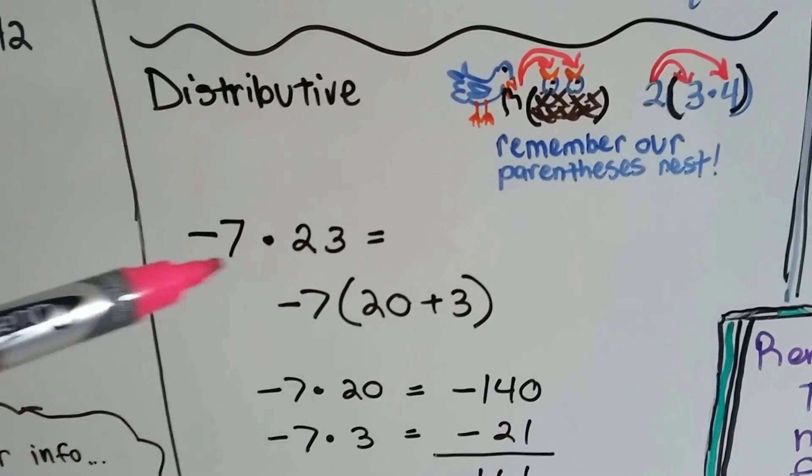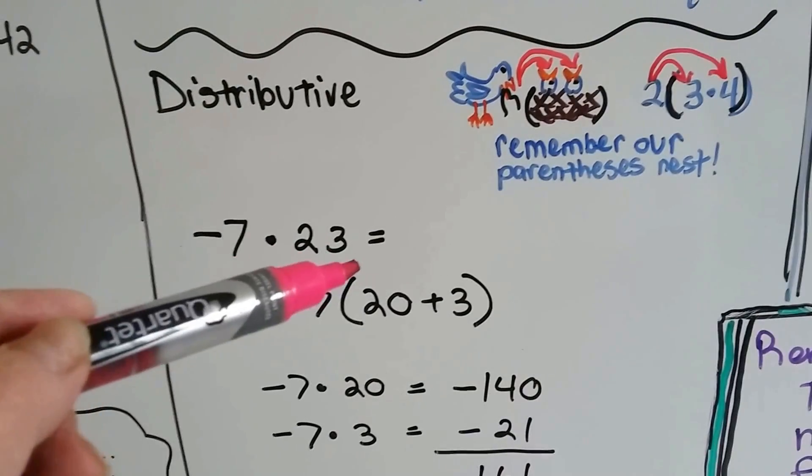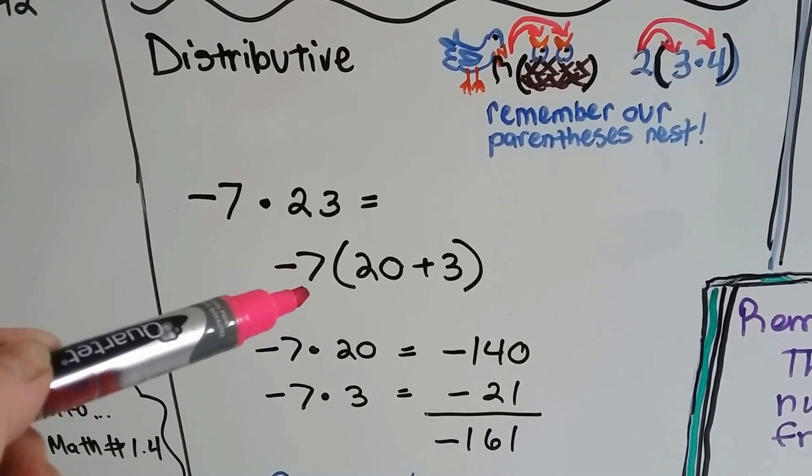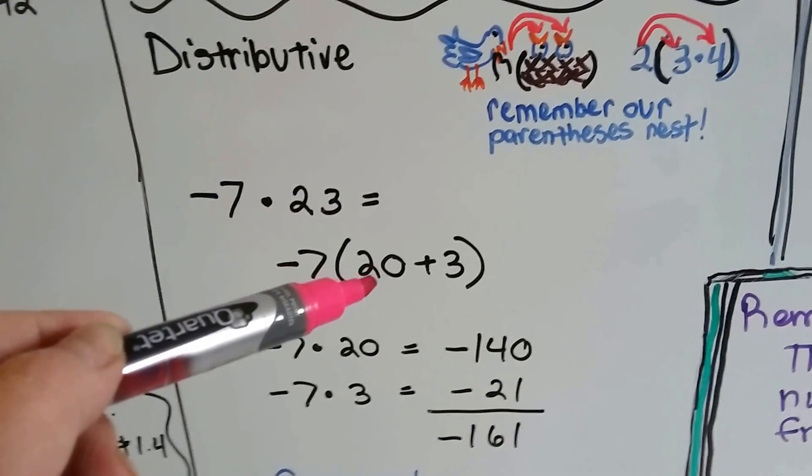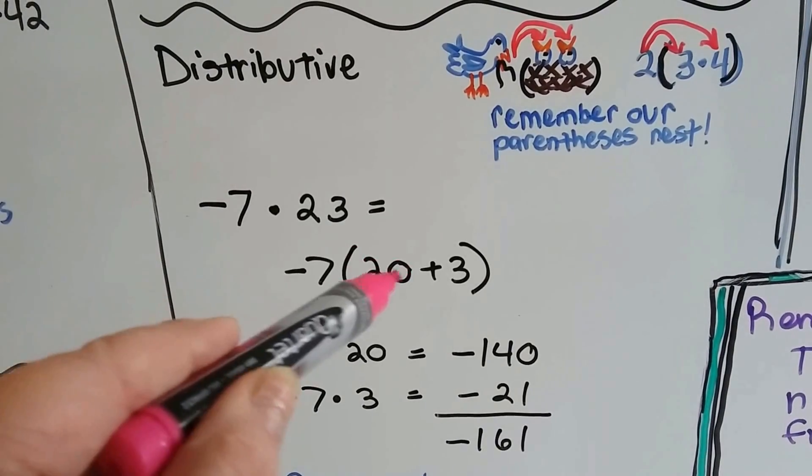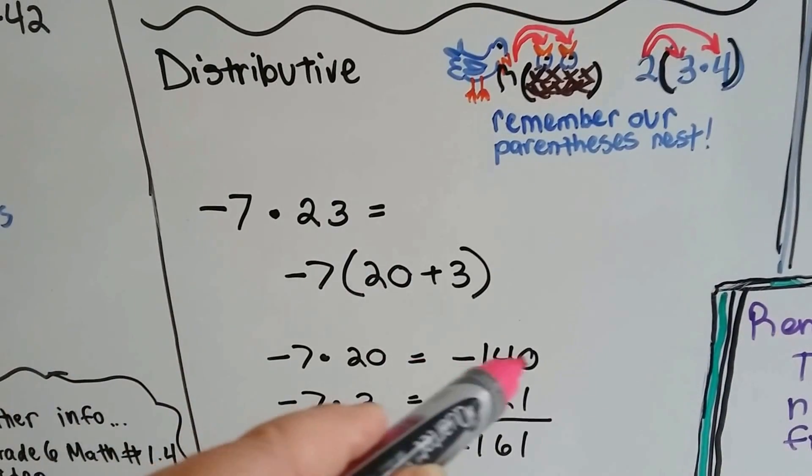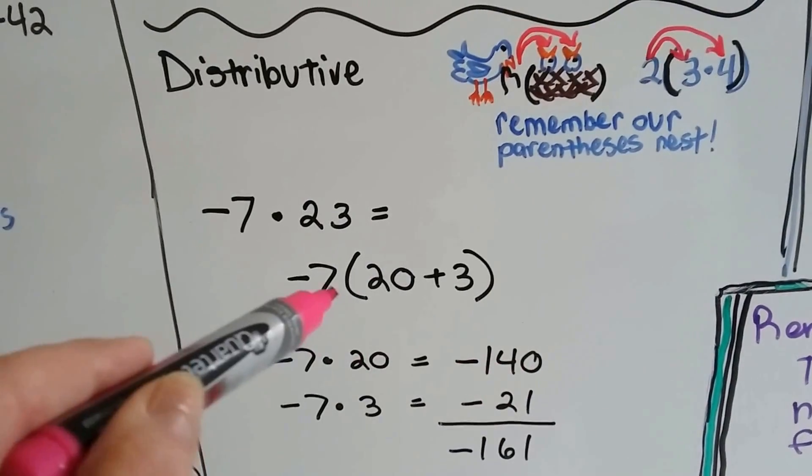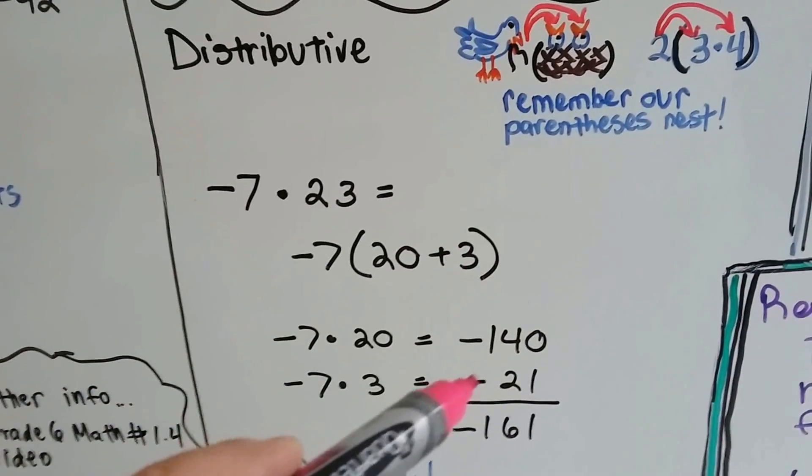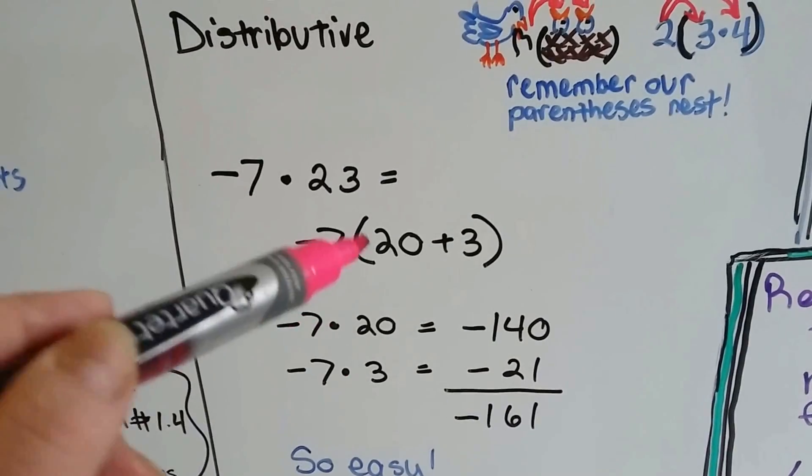So, with the distributive, we can break this number apart, this 23. Instead of saying negative 7 times 23, we can make it easier on ourselves and say negative 7 times 20, which is easy, because it's just like negative 7 times 2 with a 0 added on the end. That would be 14 with a 0, 140. And then we add it to negative 7 times 3, which is 21.